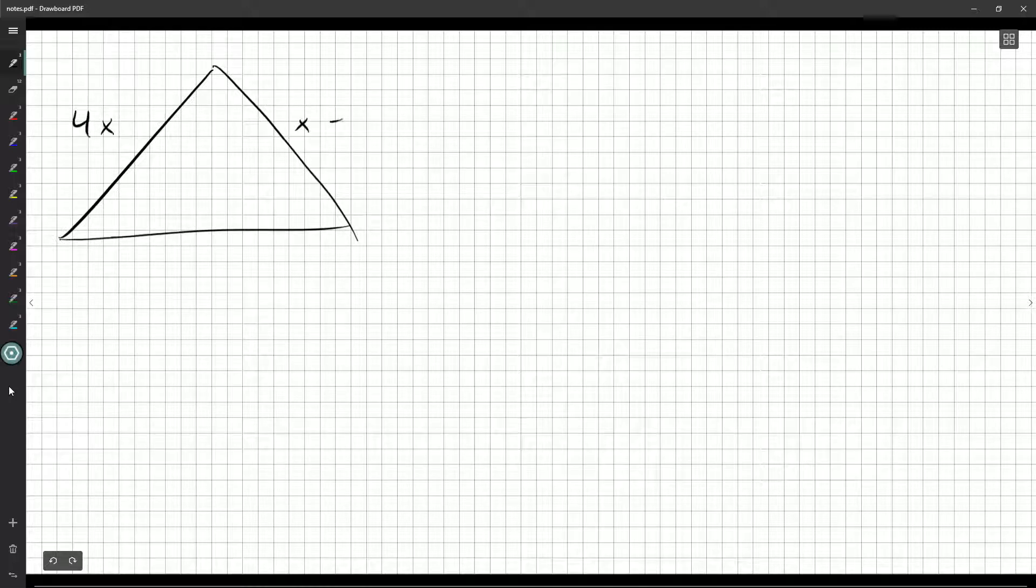One of these sides is 4x, the other is x plus 12. But if it's an equilateral triangle, then these values must be equal. So 4x equals x plus 12. Subtract x from both sides, divide by 3. You can see the value of x is 4.